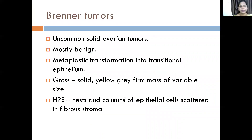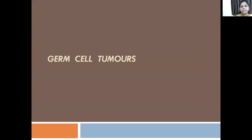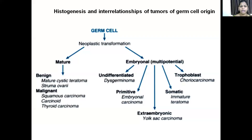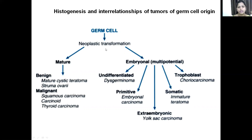We have already dealt with the surface epithelial tumors. Now we will be talking about the germ cell tumors of the ovary. These comprise a very important aspect of the ovarian tumors. The cell of origin, as the name itself suggests, are the germ cells. Histogenesis and interrelationship of tumors of germ cell origin: this germ cell, due to some mutation, if they undergo neoplastic transformation, they give rise to the various germ cell tumors. If this neoplastic transformation is towards the mature somatic tissues, then teratomas arise.